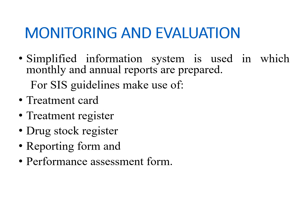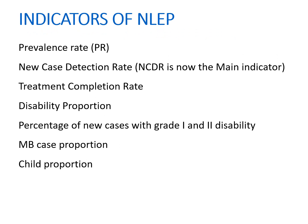Monitoring and evaluation of the program: A simplified information system is used in which monthly and annual reports are prepared, using treatment cards, treatment registers, drug store registers, reporting forms, and performance assessment forms. Important indicators for monitoring the NLEP are: prevalence rate; new case detection rate (the most important indicator); treatment completion rate; disability proportion; percentage of new cases with grade 1 and grade 2 disability; multibacillary case proportion; and child proportion.